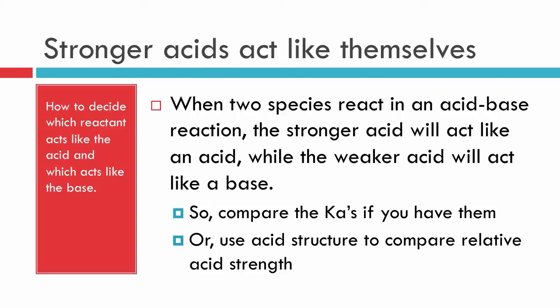So to answer the question of which will act like which when we get these things into solution and we're reacting them, just remember with the two species, the stronger acid will act like an acid, while the weaker acid will act like a base. So we compare the equilibrium constants, if we have them, and we can easily make that determination if we have the equilibrium constants. However, we may not have them, and therefore we would have to use the acid structure to compare the relative acid strength. And we'll leave that for a different tutorial. Today, for this tutorial, we'll use the actual equilibrium constants to make our decision.